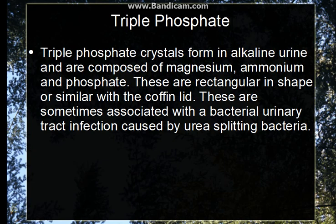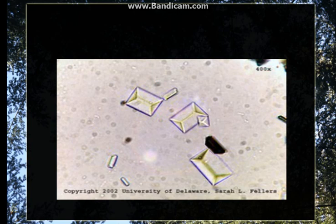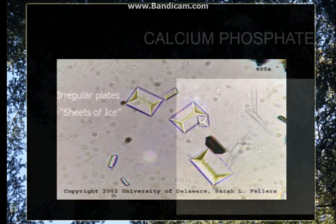Triple phosphate, also known as 'true white stones,' is composed of magnesium, ammonium, and phosphate. They are rectangular in shape and have a characteristic appearance known as coffin lid appearance. They are mostly seen after bacterial urinary infections caused by urease-splitting bacteria. Here is the typical picture of the coffin lid appearance.